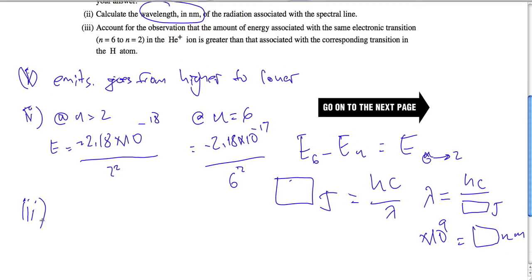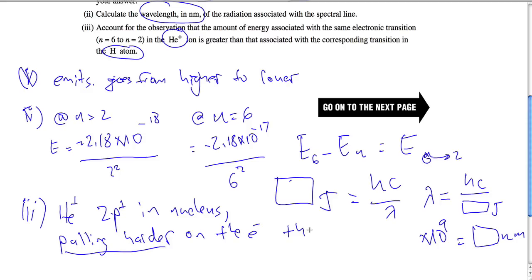For the last one, account for the observation that the energy associated with the same electronic transition in helium plus ion is greater than the energy associated with the transition in hydrogen. That's simple. In helium plus, there are two protons in the nucleus pulling harder on the electron than the one proton. So anytime you're talking about energy of electrons, you want to think about how many protons are in the nucleus pulling.